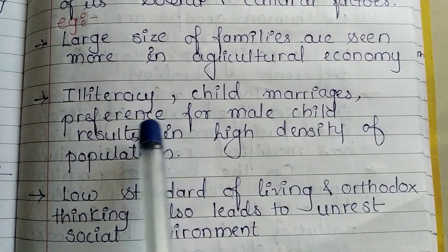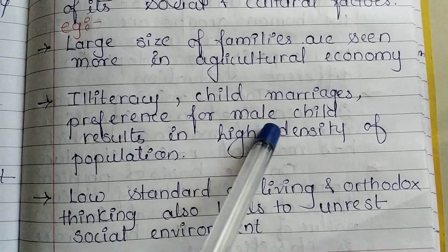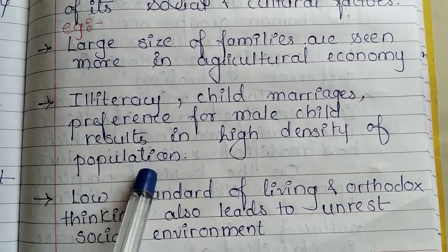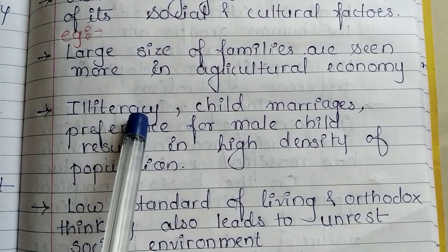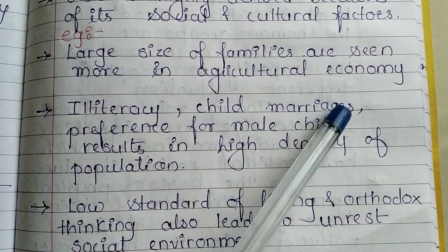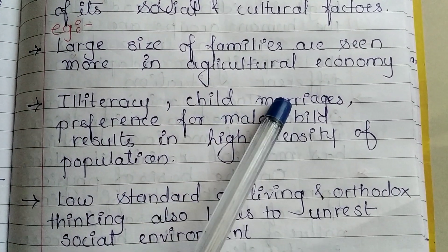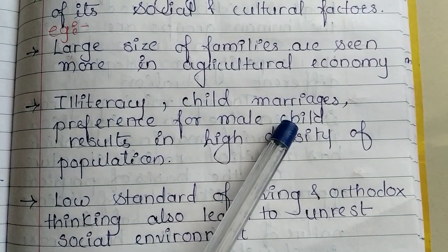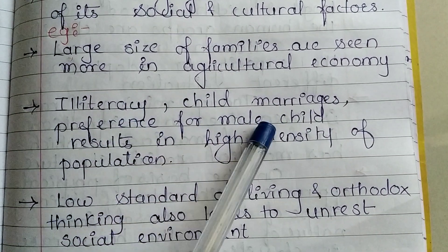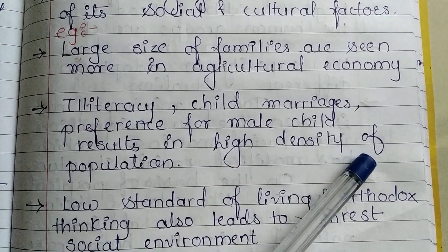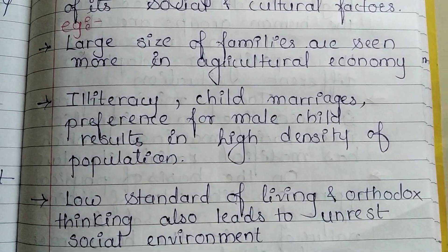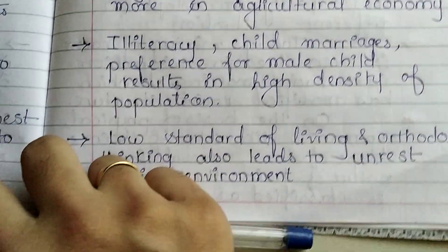Illiteracy, child marriage, and preference for a male child result in high density of population. Wherever there is illiteracy, child marriage is also predominant among orthodox people. The urge for a male child is also a result of high density of population.